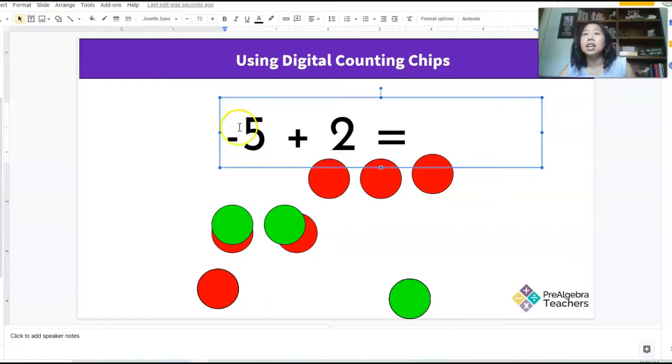Okay. So what do I begin to notice? If I have a negative and a positive, it's almost like, how do I go from five to two and get three? It's almost like I'm subtracting, right?